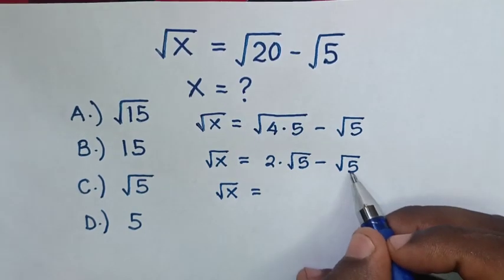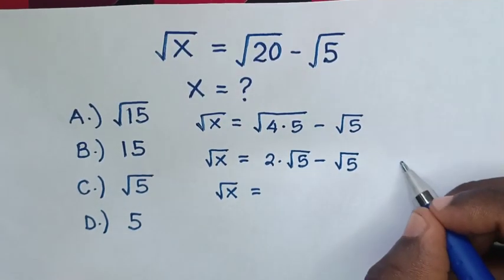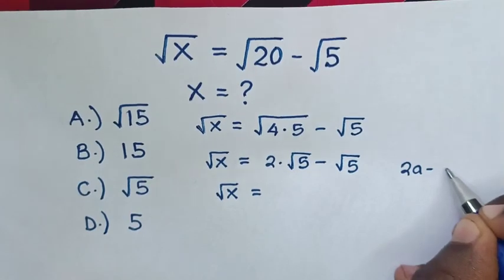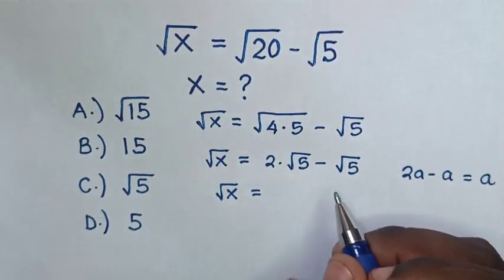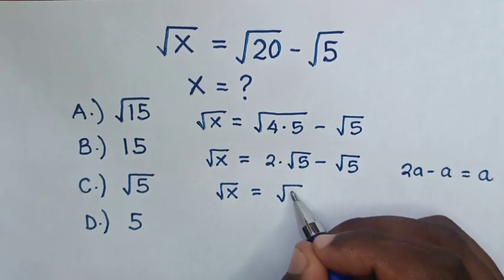This is the same as 2a minus a, which equals a. So 2 square root of 5 minus square root of 5 equals square root of 5.